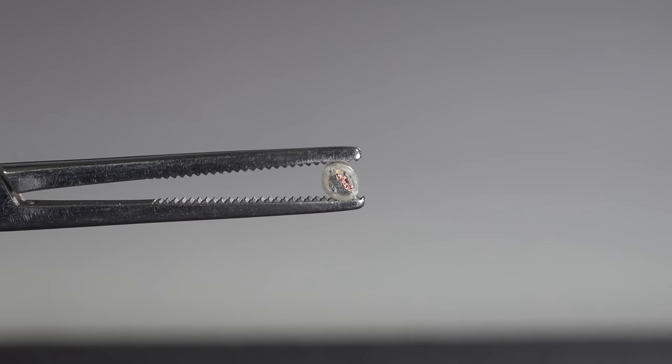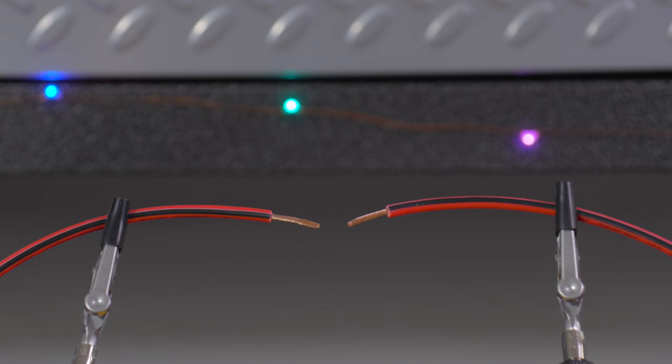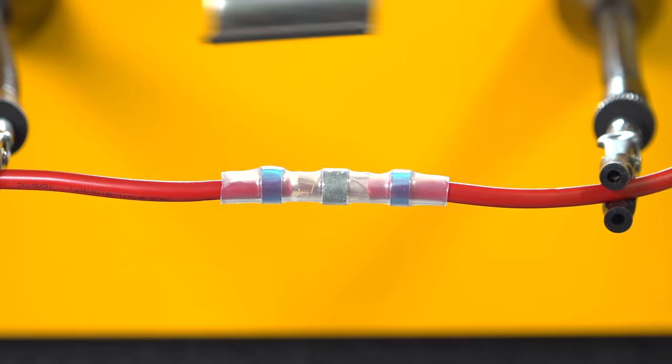Because remember, many people just use crimp connectors that don't have any solder at all. So by using one of these connectors, you're going to get the benefits of a soldered joint, but with the speed and convenience of a crimped on connector.